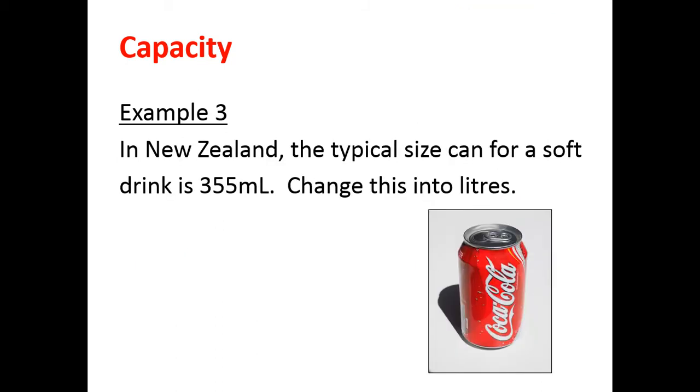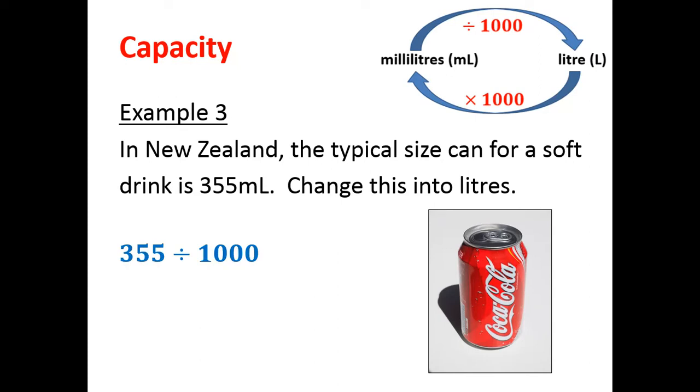Example 3. In New Zealand, the typical size can for a soft drink is 355 milliliters, or 355 mils. Change this into litres. Once again, our diagram, we're changing milliliters into litres. We need to divide by 1,000. So 355 divided by 1,000 gives 0.355 litres.